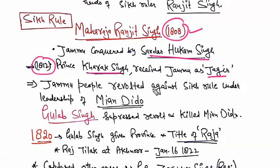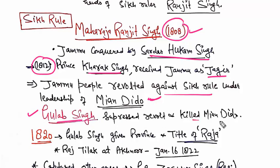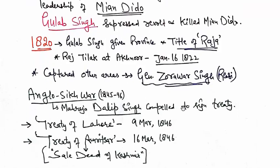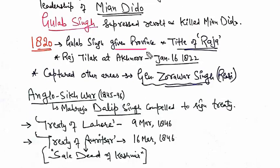The people revolted against the Sikh rule, and it was very tough for Maharajah Ranjit Singh to suppress the revolt in Jammu. Gulab Singh joined Maharajah Ranjit Singh as a soldier and later, through his bravery, killed Mian Di Dodo and was able to suppress the revolt. Thus Maharajah Ranjit Singh gave Jammu province to Gulab Singh and also allowed him to keep an army of his own.